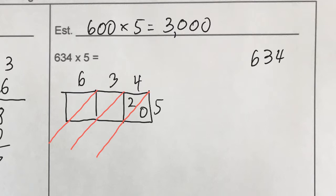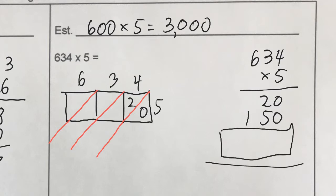Partial products, again, nice and neat. 4 times 5 is 20. 5 times 30 is 150. And then you've got one more, which then you'll add, but I'm going to let you finish that on your own.